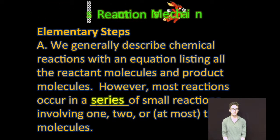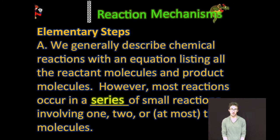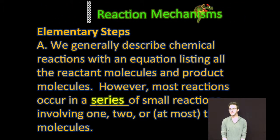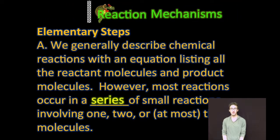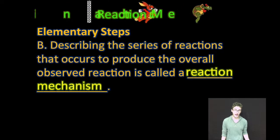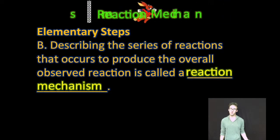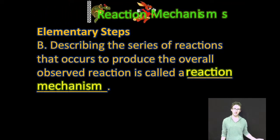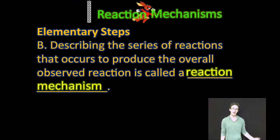Generally, we describe chemical reactions with an equation that lists all the reactant molecules and all the product molecules. However, most reactions occur in a series of small reactions involving one, two, or at the very most in rare situations, three molecules. Describing the series of reactions that occur to produce the overall observed reaction is what is called a reaction mechanism.